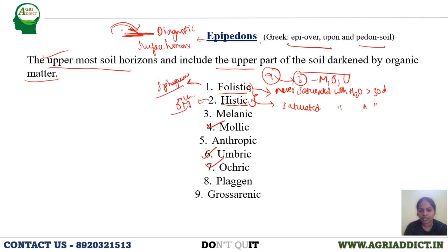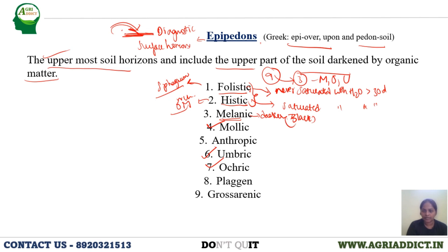Melanic epipedon — 'melanic' refers to melanin pigment, something darker in color. We can define it as a thick black horizon of about 30 centimeters thickness, and it has andic soil properties.